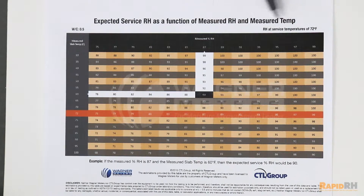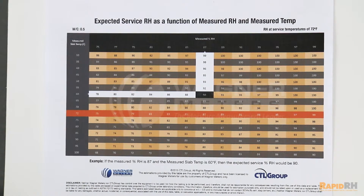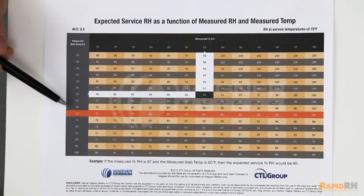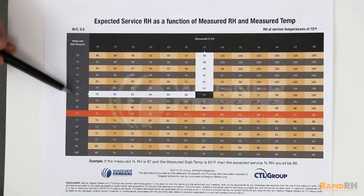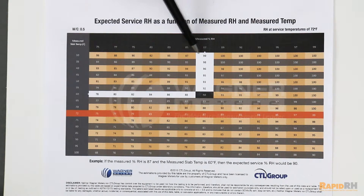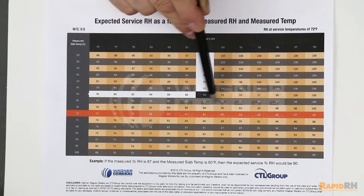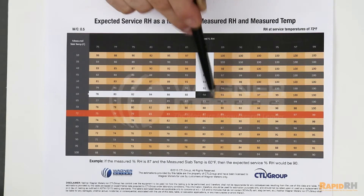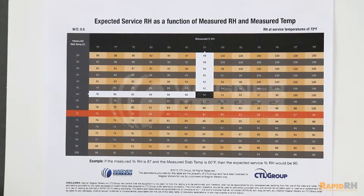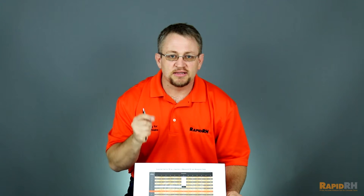You can see in this example: at 60 degrees measured temperature in the slab, we're measuring 87% relative humidity. If you see where these two cross — right there — it says 90%. What that means is, once you drive that temperature from 60 degrees up to 72 degrees, you can predict that the relative humidity in the concrete will be 90%.